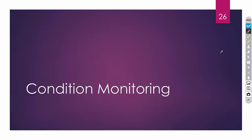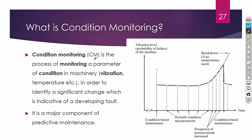In this lecture we are going to discuss condition monitoring. Condition monitoring is the process of monitoring a parameter of condition in machinery in order to identify a significant change which indicates a developing fault. We monitor the system's performance 24/7 based on various parameters. For example, we can monitor temperature — if we have a safe limit of 70 degrees Celsius and the temperature exceeds that limit, it means there is some fault in the system that we can rectify.